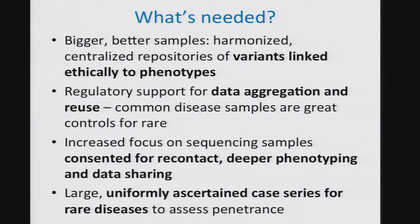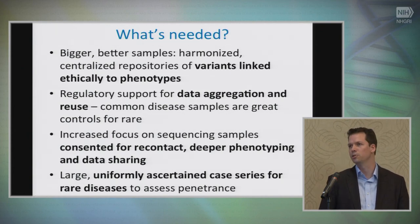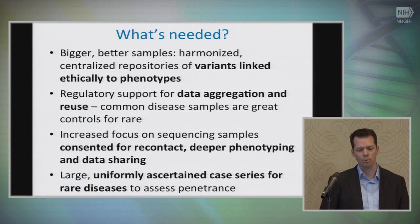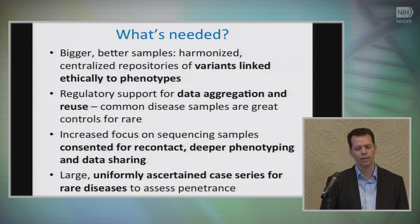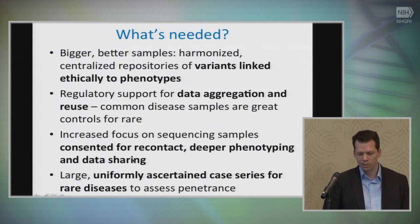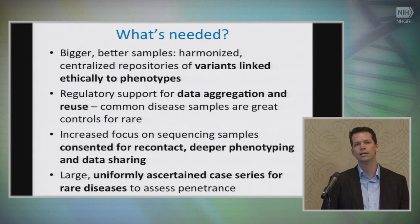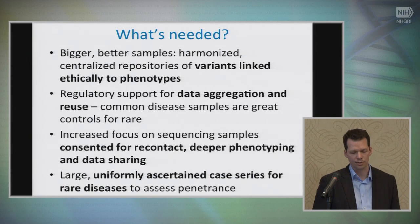I wanted to finish with a slide that summarizes some key challenges we've learned about in performing EXAC. First, it's critical that we build bigger samples — bigger samples will make an enormous difference to our power to do these analyses. Having more samples, making sure data are harmonized and centralized, and that variants can be ethically linked to phenotypes is absolutely critical moving forward — that will require regulatory support for data aggregation and reuse, which often falls into a very difficult ethical grey area. We need much more clarity in that space. We also need an increased focus on sequencing samples consented up front for recontact, deeper phenotyping, and data sharing. And if we want to assess penetrance uniformly, we need to be collecting large, well-ascertained collections of cases for a whole variety of diseases — not just common diseases but also rare — to really understand the full spectrum of variation in those genes.